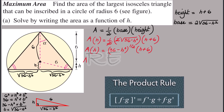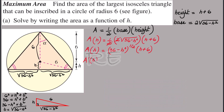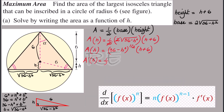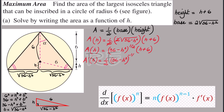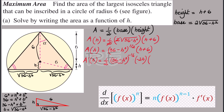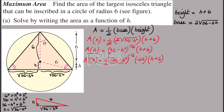To make the derivative easier, we use the product rule. For 36 minus h squared to the one half, we use the chain rule: it's one half times 36 minus h squared to the negative one half, times the derivative of the inside, which is negative 2h, times h plus 6, plus 36 minus h squared to the one half times the derivative of h plus 6, which is 1.